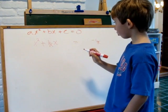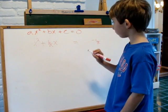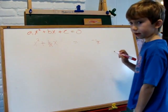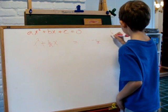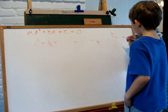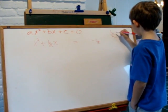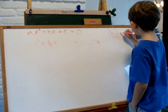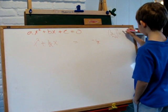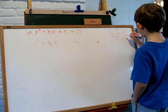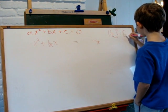Then we look at the coefficient of x, which is b over a. We halve it, which is b over 2a. We square it, which is b squared over 4a squared.